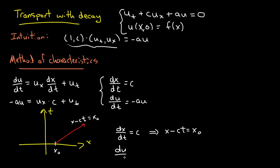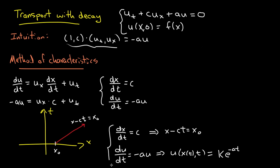So what would I do if I solved this equation naively? Well, du/dt is minus au. That means u as a function of t along the characteristic line equals some constant k times e to the minus at. This is the information we get out of our characteristics. Now let's use our initial value. The initial condition says that plugging in t equals 0 gives us u(x0, 0), which equals f(x0). But we also know that equals k times e to the minus a times 0, which is just k. So k equals f(x0).